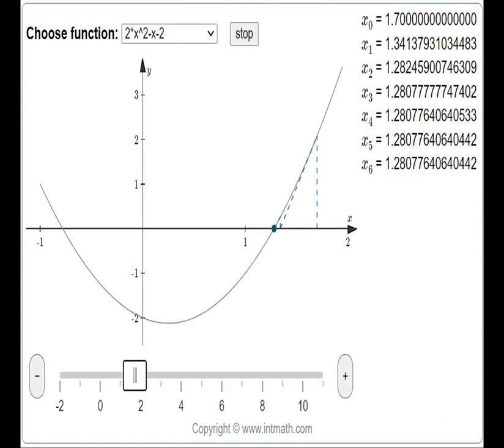For example, the graph of y = 2x² - x - 2 has two x-intercepts: one is negative and the other is positive. If we choose x₀ = 1.7 as an initial point, it will provide the closer x-intercept, which is 1.28, using Newton's method.